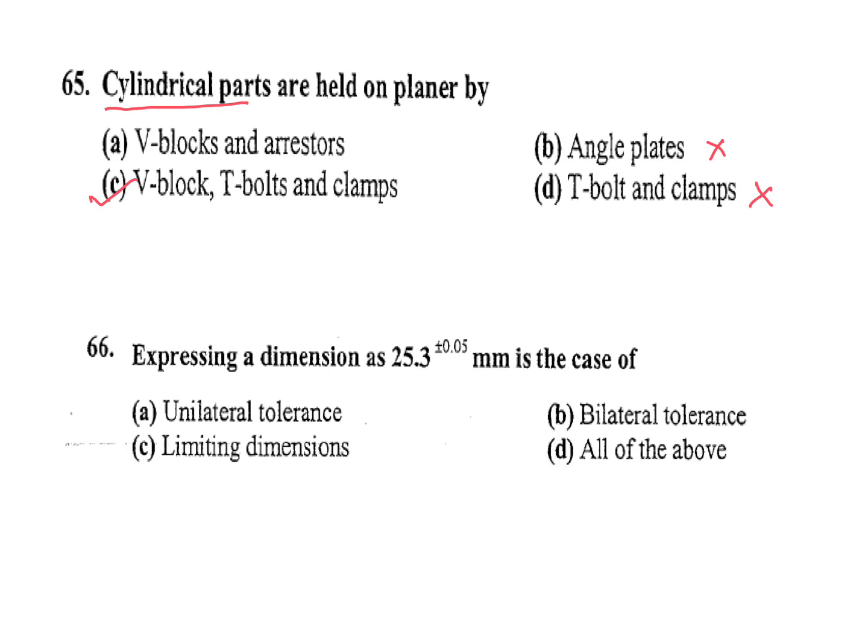Next question: expressing a dimension as 25.3 plus or minus 0.05 mm — is this A) unilateral tolerance, B) bilateral tolerance, C) limiting dimensions, D) all of the above? It is bilateral tolerance, because in bilateral tolerance we get both plus and minus 0.05.